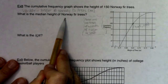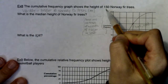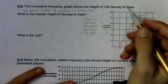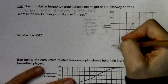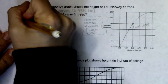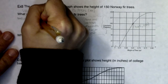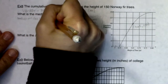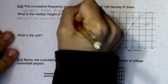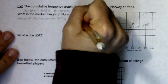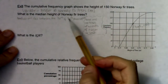Let's address: what is the median height of Norway fir trees? When you have an even number of observations, you have two middle values, and those two middle values should fall between the 75th and 76th observation. So the median will fall between the 75th and 76th observation.